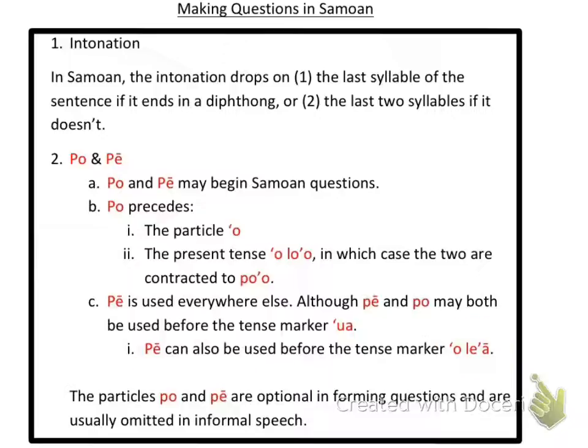The particles po and pe are optional when forming questions and are usually omitted in informal speech. In everyday talk, you don't really see these po and pe's a lot. There is another way that you use po and pe, and we're going to get to that in a more advanced video.